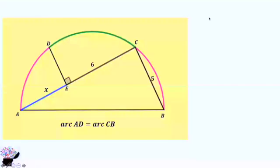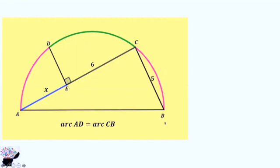Welcome, everyone, to my YouTube channel. Let us discuss this question together. We have a semicircle, and the information given to us is that arc AD is equal to arc CD. So arc AD is equal to arc CB. Let us start to solve this puzzle.